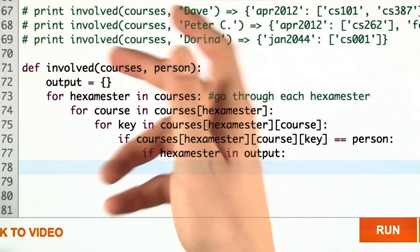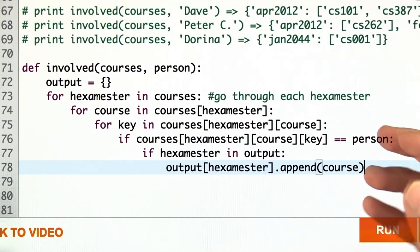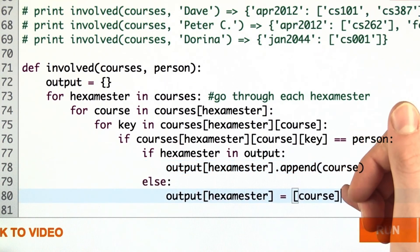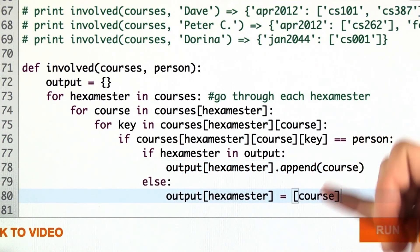If we've already added this hexamester as a key to the output dictionary, then we're just going to append this course at the end of the list associated with that hexamester. Otherwise, we're going to create a new list for which the course is the sole value.